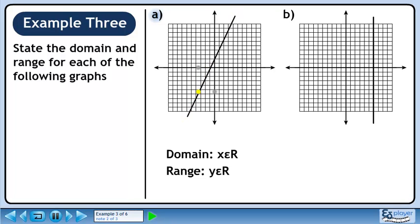In Part A, we have a line that goes forever in both directions. Since the graph never ends, we could theoretically have any value for x. The domain is simply x belongs to the set of real numbers.